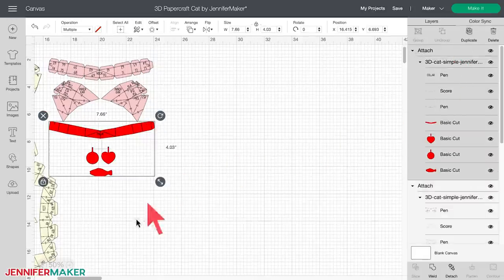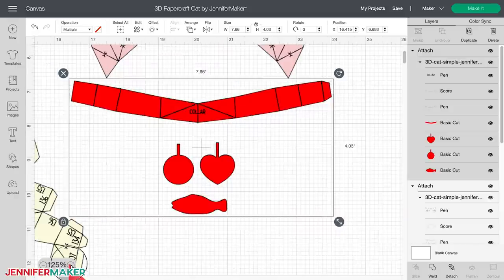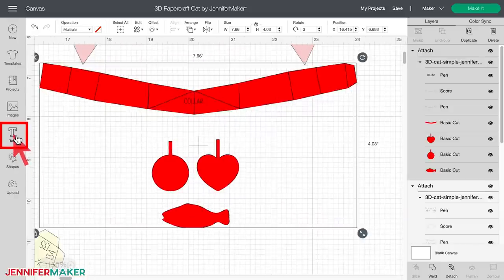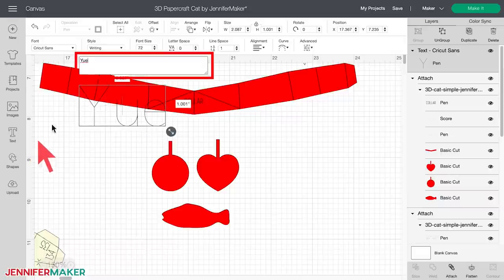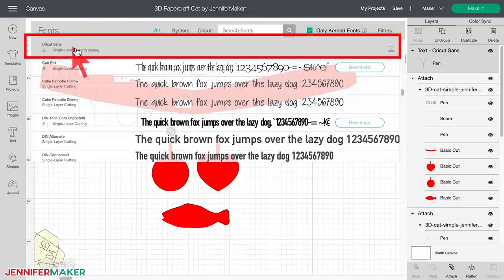If you would like to add some writing on the cats tag, which I think is a fun touch, just click on the text tool over on the left. Type in a name or word or whatever you want. Change the font to a writing font. I'm using the free Cricut Sans and then you'll want to change it to writing under the style menu right here.